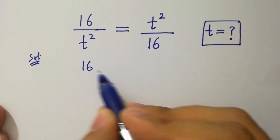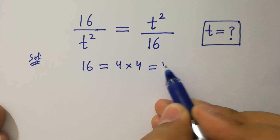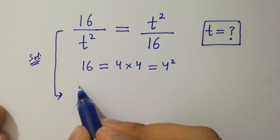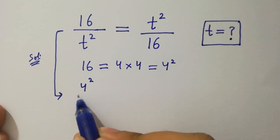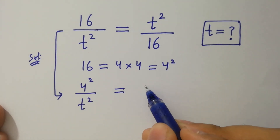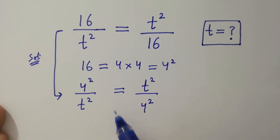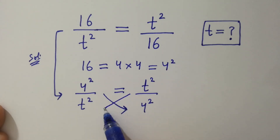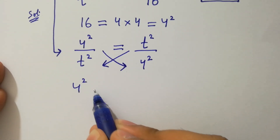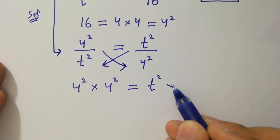Since 16 equals 4 times 4, which is 4 squared, we can write 4 squared over t squared equals t squared over 4 squared. By cross multiplication, we have 4 squared times 4 squared equal to t squared times t squared.